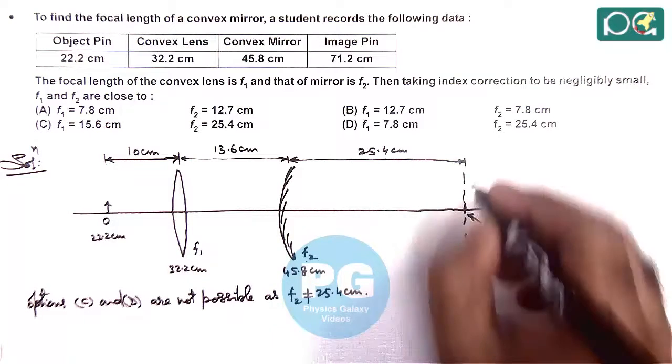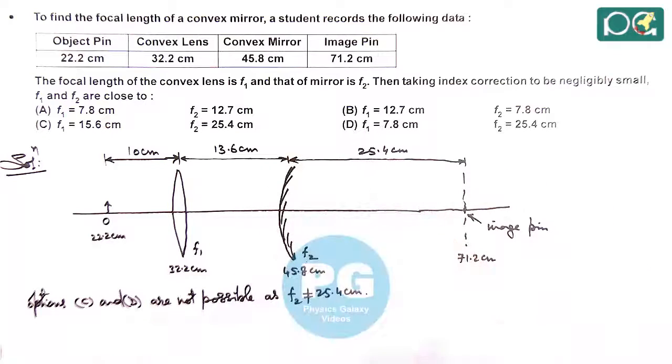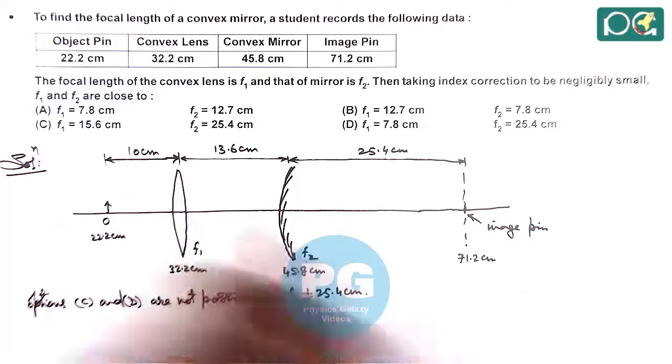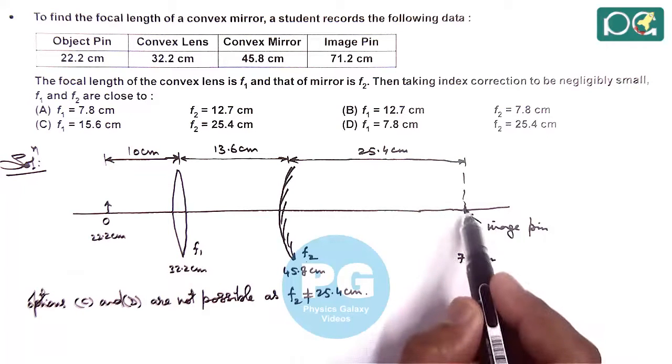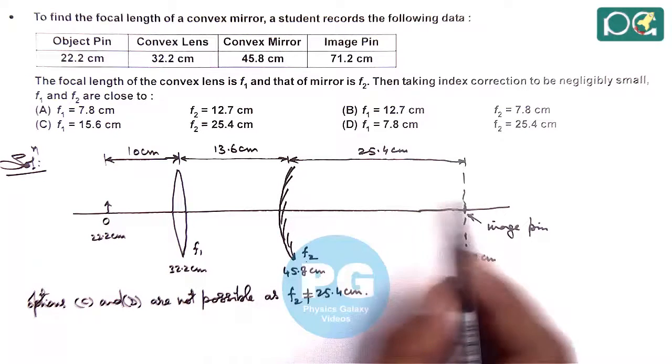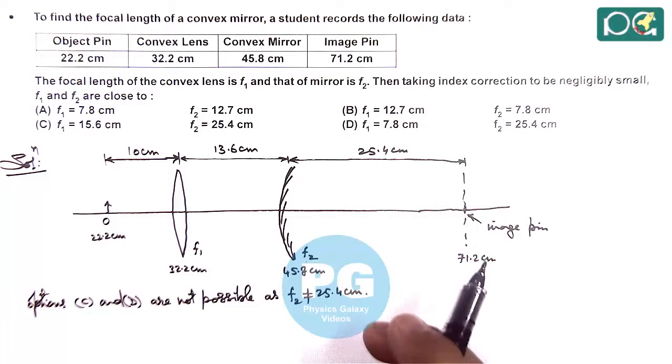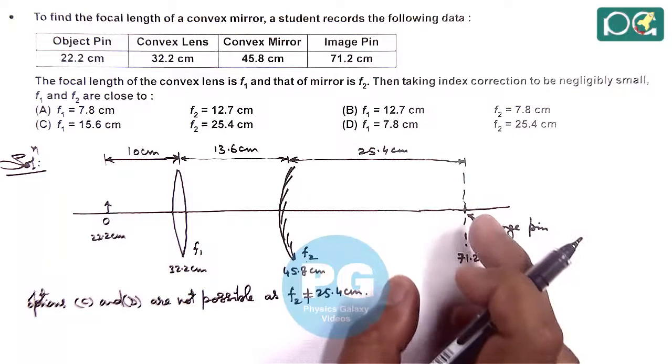Because this is the focal plane for this convex mirror. And now we need to check in option A and B which one can be correct. If image is obtained at 25.4 centimeter,